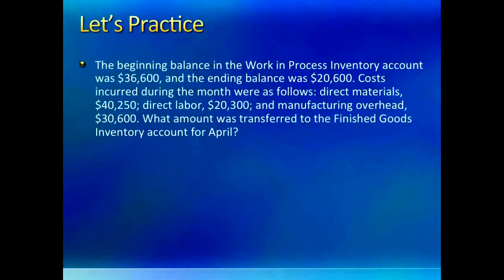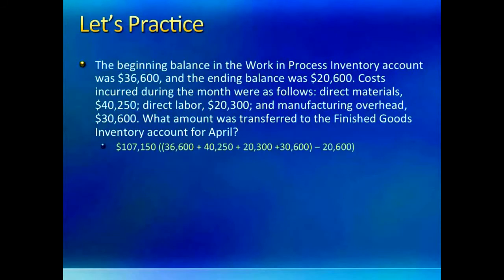Here are two more problems that start fairly easy. In the first one we have to figure out the cost of goods completed. Picture the work in process account in your mind and think about what is on the debit side and what is on the credit side. You have beginning inventory and total manufacturing costs on the debit side, and ending inventory and cost of goods completed and transferred out to finished goods on the credit side. You can figure this out by adding everything on the debit side and subtracting ending inventory to get cost of goods manufactured.